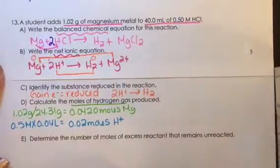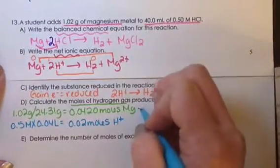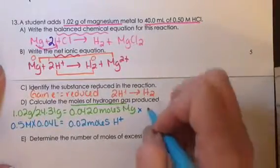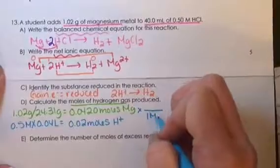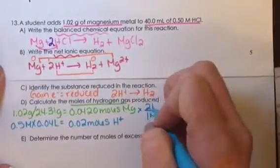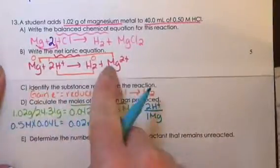Now we need to do the mole ratio to relate the two. It doesn't matter which one you choose. I'm going to change the magnesium into hydrogen, and there is one magnesium for every two hydrogen ions from the net ionic equation.